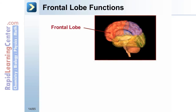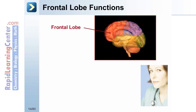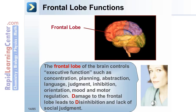One region of the cerebral cortex is the frontal lobe. The frontal lobe controls executive function, such as concentration, planning, abstraction, language, judgment, inhibition, orientation, mood, and motor regulation. Damage to the frontal lobe leads to disinhibition and lack of social judgment.